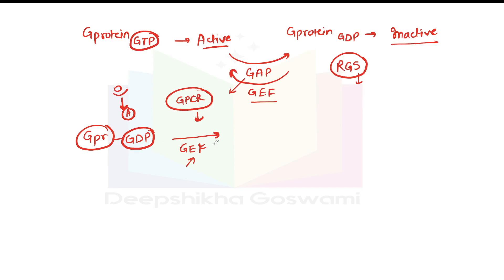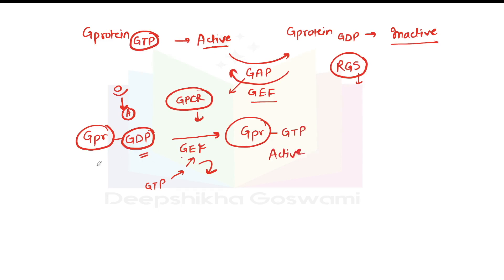When GEF is present — as it is known as Guanine Nucleotide Exchange Factor — it will remove GDP from the G protein and replace it with GTP. In this case, G protein becomes attached to GTP and is converted into the active form. When the signaling molecule arrives, this whole activation process takes place and G protein is converted to its GTP-bound active form.